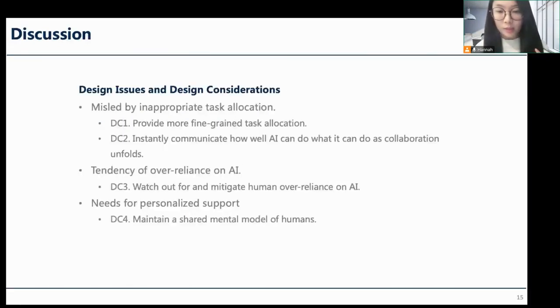Built upon the key findings in the user study, we derived several design issues in human-AI collaboration for multi-step problems and proposed corresponding design considerations. One pinpoint we found is that chemists may be misled by faulty results generated by AI during the joint action process due to inappropriate task allocation, although we have carefully discussed with the experts to define AI's capability boundary for task distribution. Therefore, we recommend designers to explore more accurate specifications of the AI capability boundary and more fine-grained task allocation in human-AI collaborative systems, as well as instantly communicate and update how well AI can do what it can do as collaboration unfolds.